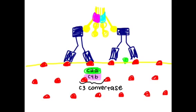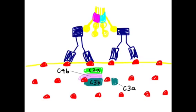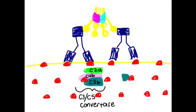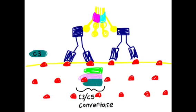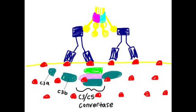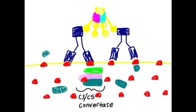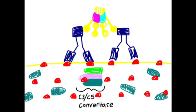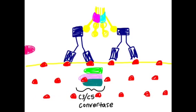C2 proenzyme binds to C4b and then is cleaved by the activated C1s. C2a and C4b become known as C3 convertase. C3 convertase binds with C3 and cleaves it into C3a and C3b. Many molecules of C3 can be cleaved. The many C3b fragments on the surface of the bacteria induces phagocytosis.